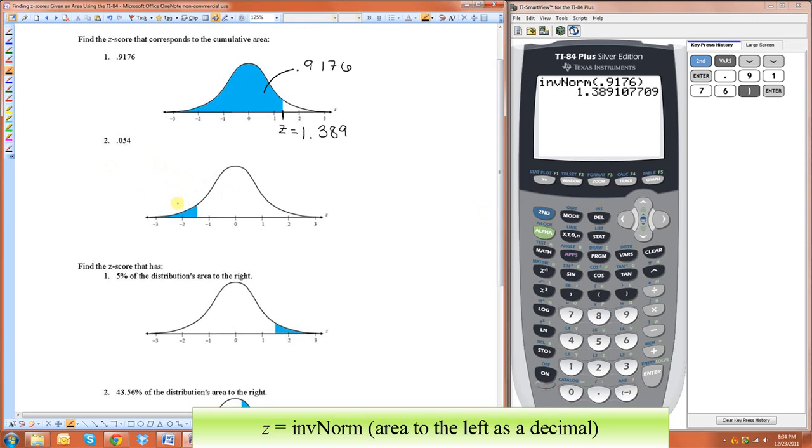So here we have the same kind of deal. We want to know the z-score that's going to be of an area of 0.054. So that's supposed to be a 4. So we're looking for this z-value right here.